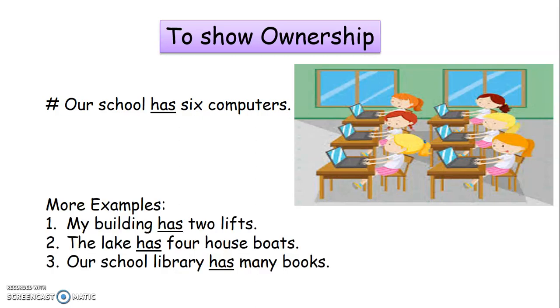Let's see more examples. First, 'My building has two lifts.' Here, 'building' is a singular noun, so we make use of the verb 'has'. Has shows what the building owns, that is two lifts.